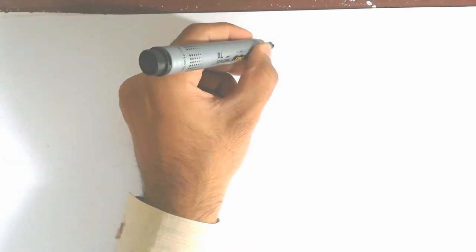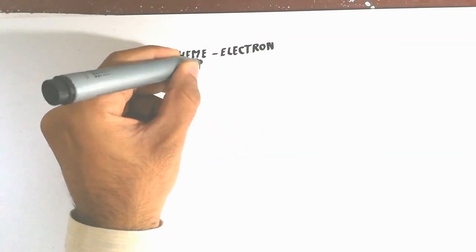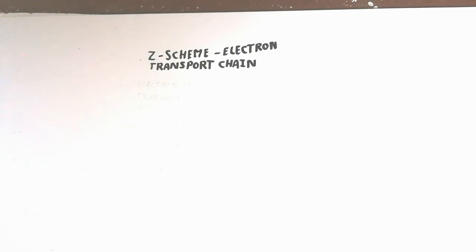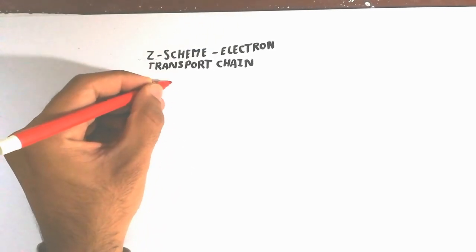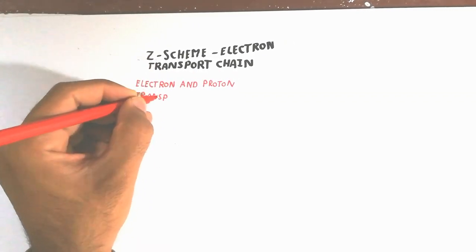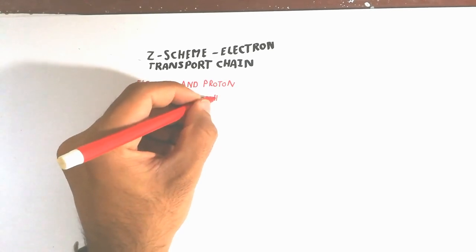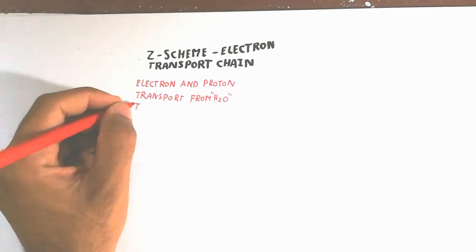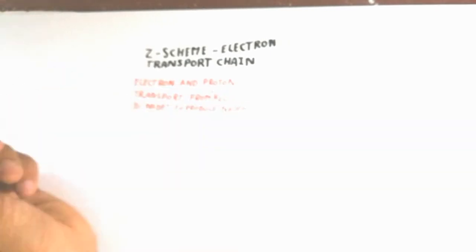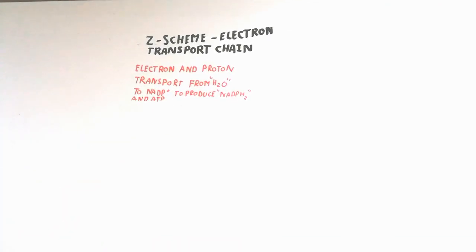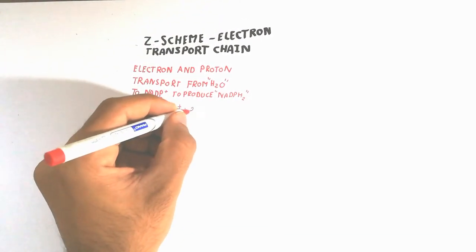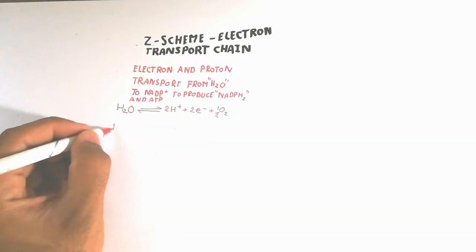First, we will build the concept about the plant basis. Electrons and protons are transported from water to NADP in plants to produce NADPH2 and ATP. That ATP and NADPH2 are useful for making sugar. We will discuss the equation — basically the structural equation of photolysis, so named because light is used to break down water.